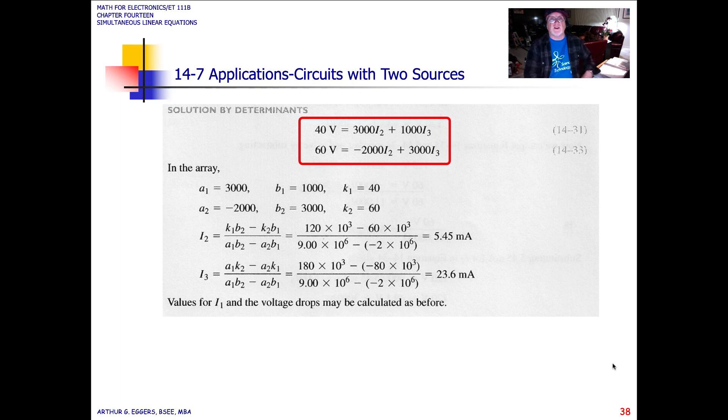Next, solving by determinants. So we start off with our two expressions, 31 and 33. We've got them set up here so that we can pull out our elements. There's our K elements, our A elements, and our B elements. So we've got everything in terms of the two currents, I2 and I3.